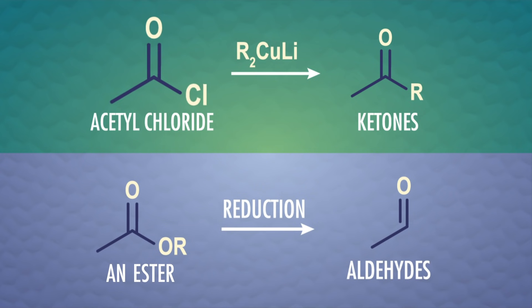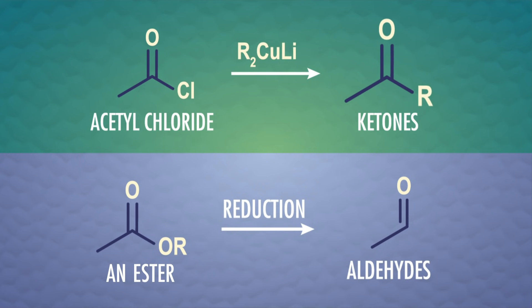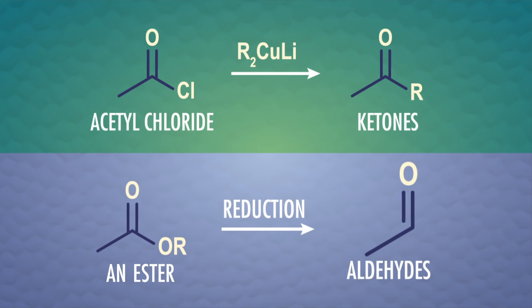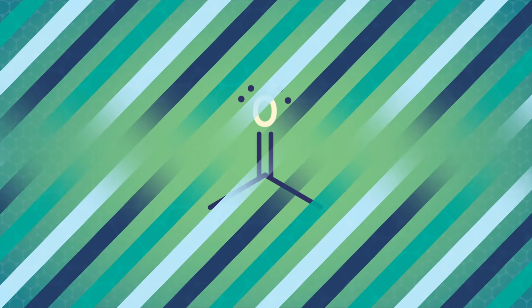There are a few more options we haven't learned yet, but here's a quick preview: acid chlorides can react with organocopper compounds to give us ketones, and using special bulky reducing agents on esters can produce aldehydes.